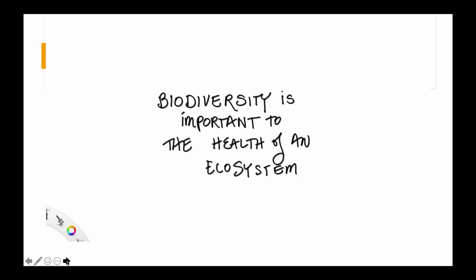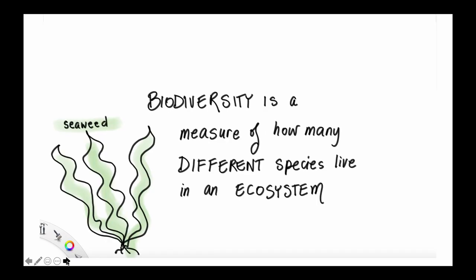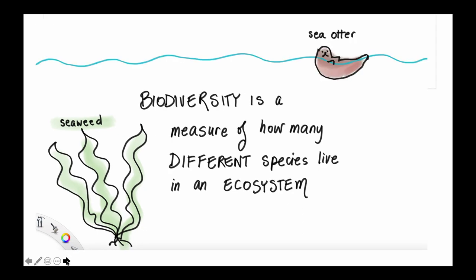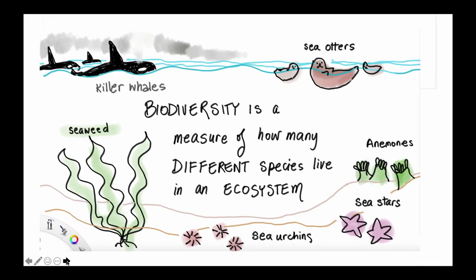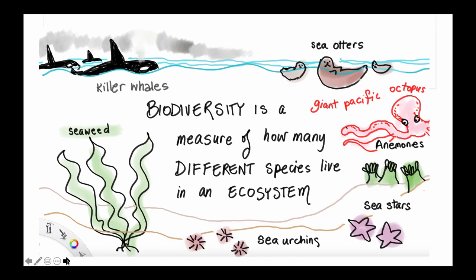Biodiversity is very important to the health of an ecosystem. Imagine an ecosystem off of our BC coast, such as one that includes seaweed as the most important species — the photosynthesizer that photosynthesizes all the carbon for the ecosystem. We've got the sea otters, sea urchins, sea stars, anemones, killer whales, and a giant pacific octopus. You can imagine that this ecosystem is filled with life and many different species.